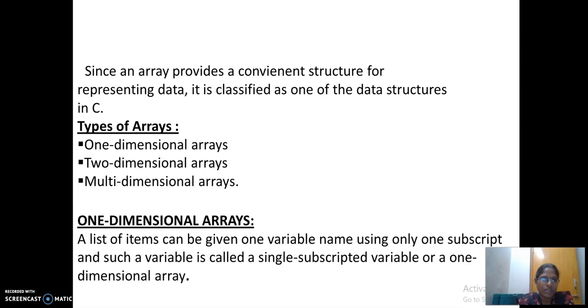Types of arrays are one-dimensional, two-dimensional, and multi-dimensional. Now, we will see each dimension in detail. One-dimensional array. A list of items can be given one variable name using one subscript and such a variable is called as your single subscript value or a one-dimensional array. If you are using only one subscript, then that is called as your one-dimensional array.